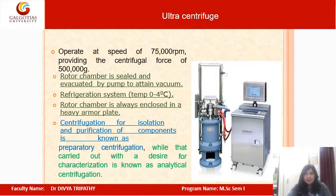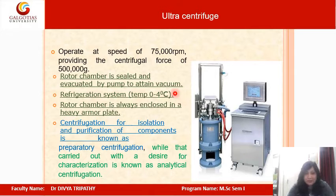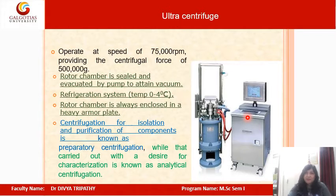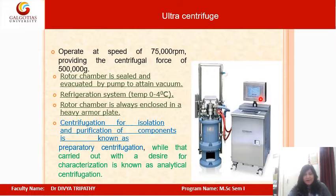Ultracentrifuges are very efficient compared to desktop and high-speed centrifuges. They can operate at speeds of 75,000 RPM and may provide centrifugal forces of 500,000 G. The rotor chamber is sealed and evacuated by a pump to attain vacuum. A refrigeration system maintains temperature from 0 to 4°C. The rotor chamber is enclosed in a heavy armor plate. These centrifuges also have a hardware unit associated with a software system, allowing input of different RPM or RCF values.